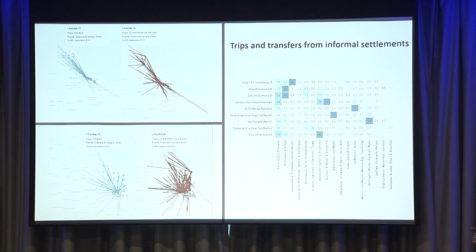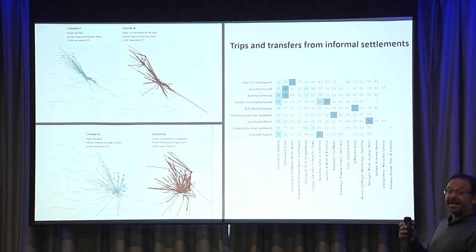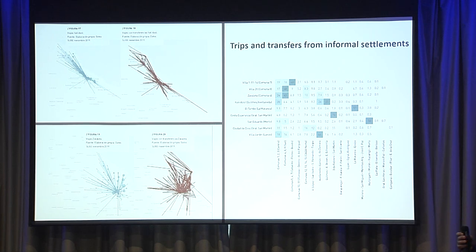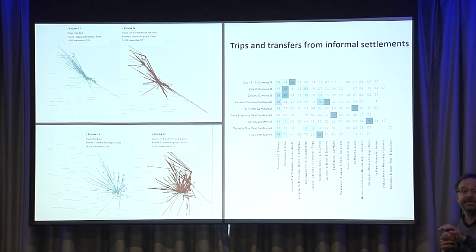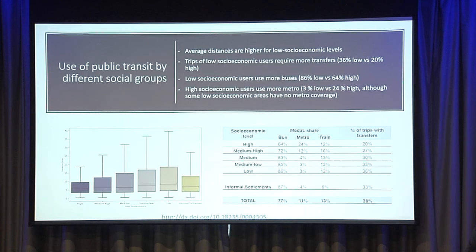Another work we did with this package was analyzing how people from informal settlements move, and how the travel patterns differ between low-income populations and the rest. Using the first trip of the day — which is presumably closest to their homes — we identified trips that started within a radius of informal settlements. We created origin-destination matrices and graphs to help analyze how this population moves.